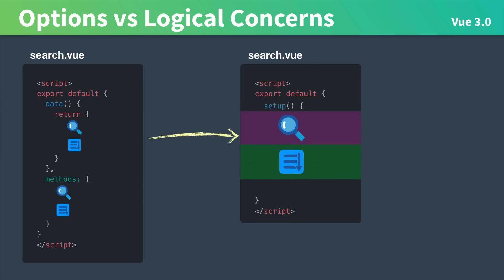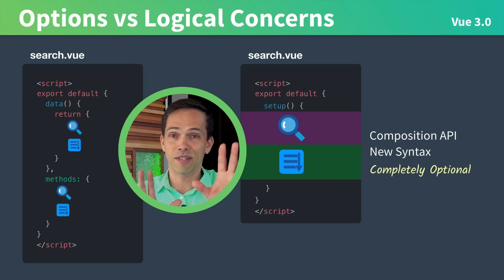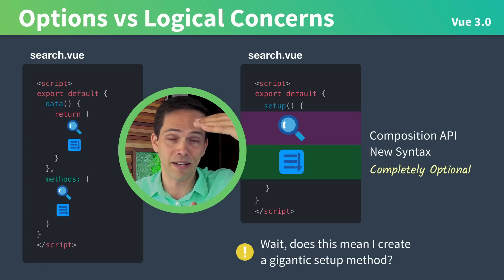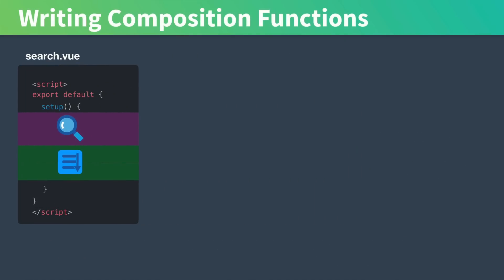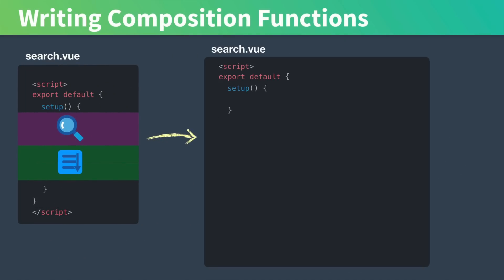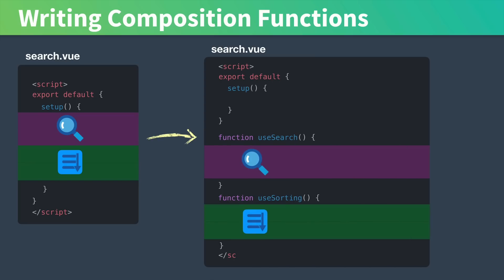This all starts with the new setup method inside of our components. Inside the new setup function is where we can start using the Composition API syntax, and this syntax is completely optional — we can still continue to code up components like we have before using the regular syntax. With Vue 3 you end up writing composition functions. These are outside of your setup method and they could be in the same component file. Here you can see I have a useSearch function and a useSorting function — these are called composition functions, and they're called from inside the setup method.